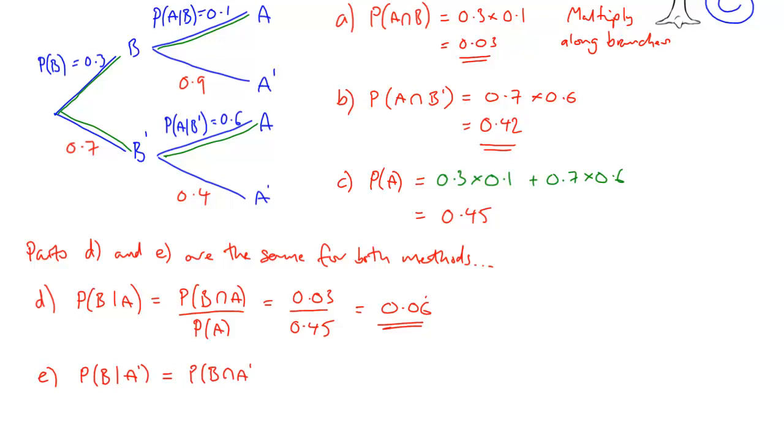And part E works in a very similar way. Same formula, just with A replaced by not A. And we have to get the bits and pieces from the diagram, either from the Venn diagram or the tree diagram. I'll let you check that those are the two things to multiply for the intersection of B with not A. That's the probability of not A, which is 1 minus 0.45. And just stick it in the calculator. This is what you get.